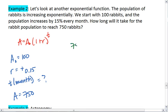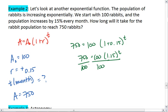I plug these values in: 750 equals 100 times 1 plus 0.15 to the t. 750 equals 100 times 1.15 to the t. Divide both sides by 100. Get 1.15 to the t equals 7.5.